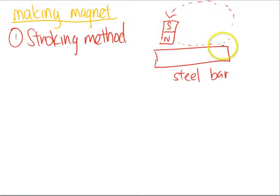What's going to happen is at this end of the steel bar, it will become a south pole. At this end of the magnet, it will become a north pole.